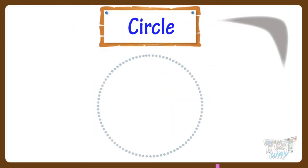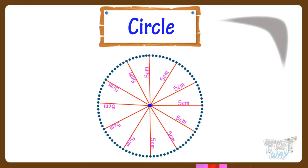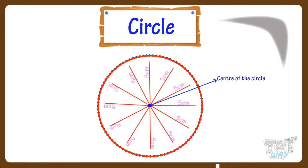Circle is a 2D figure, which is formed of points equidistant from the center. This is the center of the circle. That is, a circle is made up of points which are all at equal distance from the center.